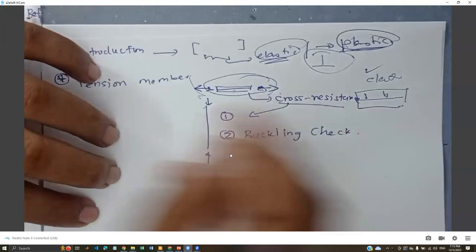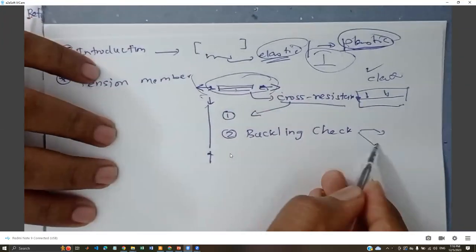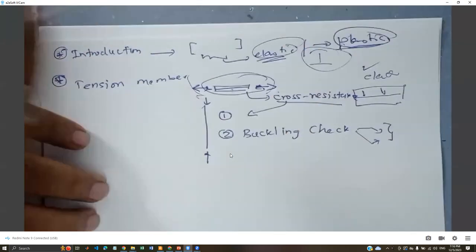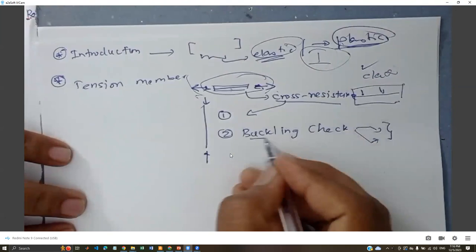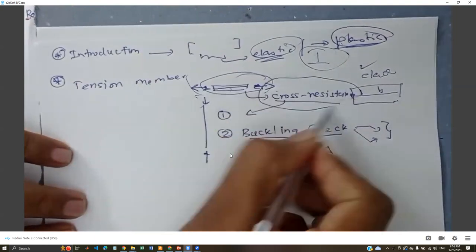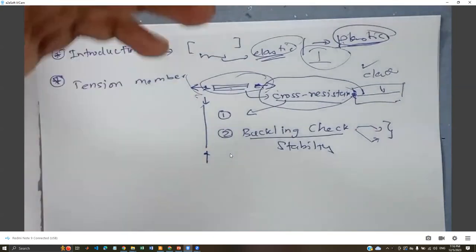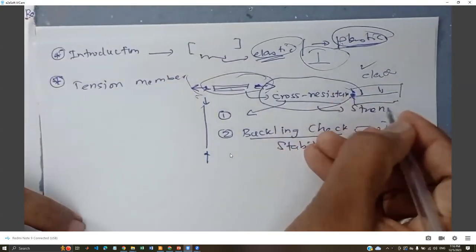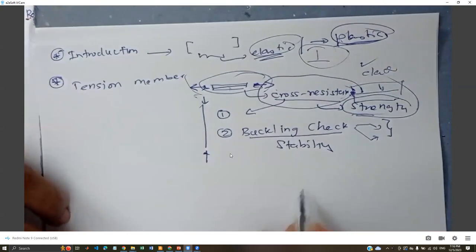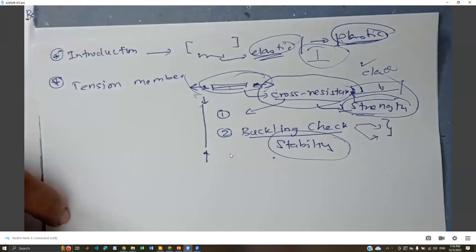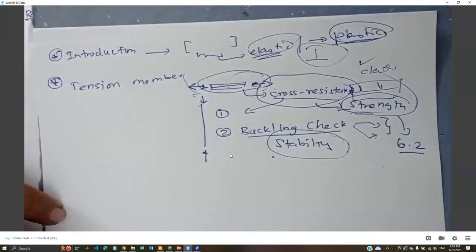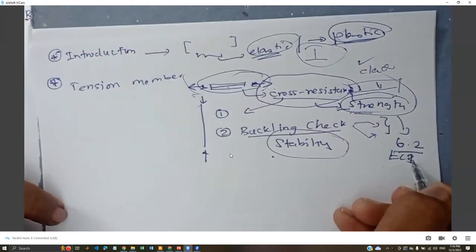To check buckling we did classifications and then performed the buckling check. The buckling check can be referred to as the stability check, and the cross-section resistance is the strength design. When dealing with strength we use EC3 Section 6.2, and when dealing with buckling we use Section 6.3.